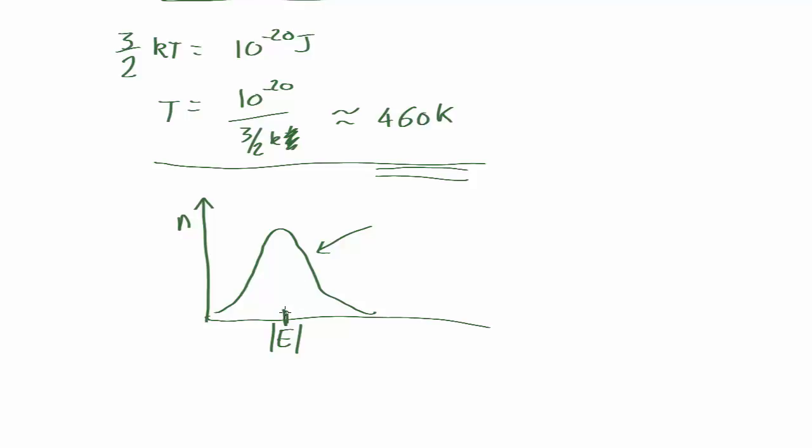But the crucial point is, even if the average molecule doesn't have enough energy to break the bonds and escape, the ones at the tail of the distribution might. So even though the average energy is too low to boil, all you need is a small number above this threshold. These molecules will break away and fly off as vapor.